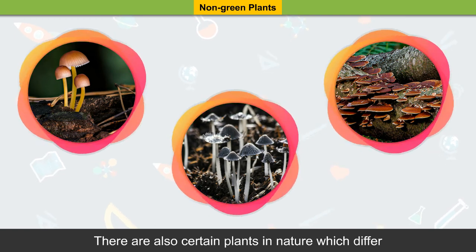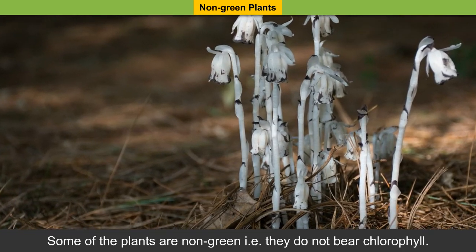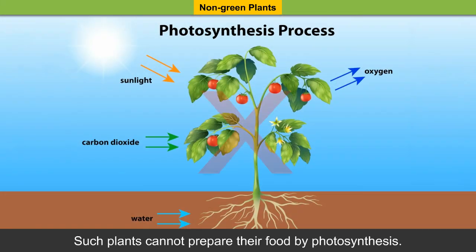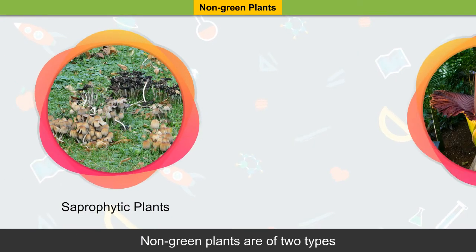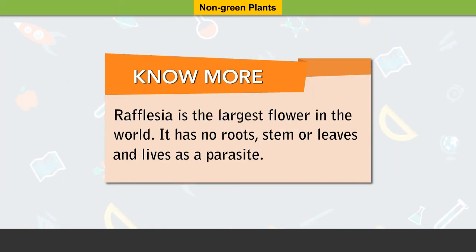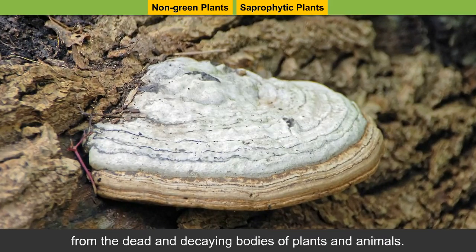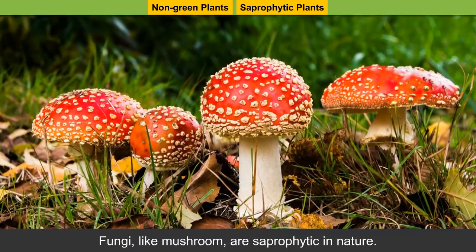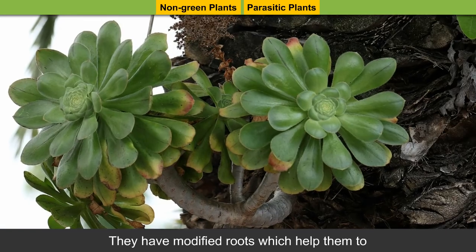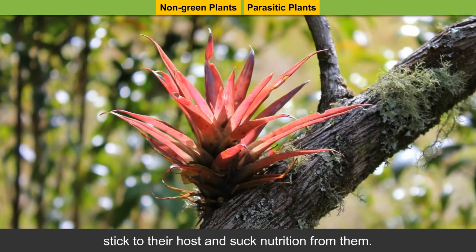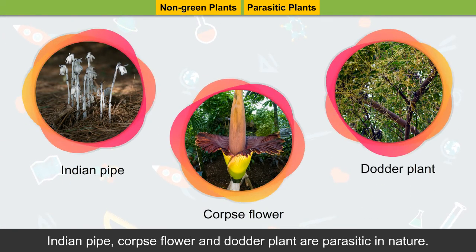There are certain plants in nature which differ from the basic properties of their class. Some plants are non-green — that is, they do not bear chlorophyll and cannot prepare food by photosynthesis. Non-green plants are of two types. Rafflesia, the largest flower in the world, has no roots, stem, or leaves and lives as a parasite. Saprophytic plants derive nutrition from the dead and decaying bodies of plants and animals; fungi like mushroom are saprophytic in nature. Parasitic plants derive nutrition from other plants — they have modified roots to stick to their host and suck nutrition from them. Indian pipe, corpse flower, and dodder plant are parasitic in nature.